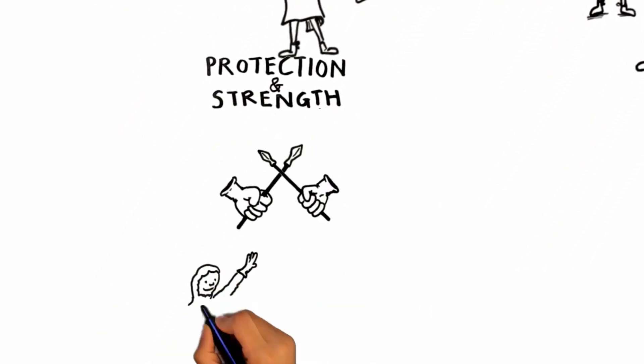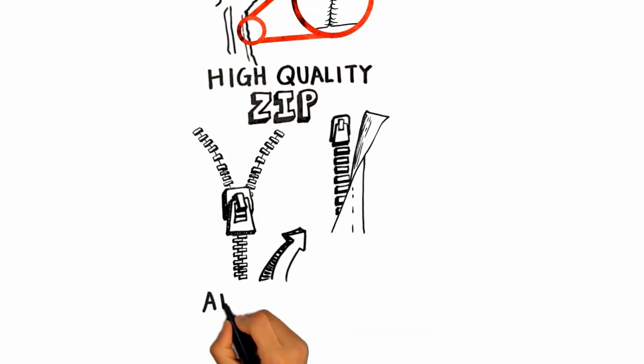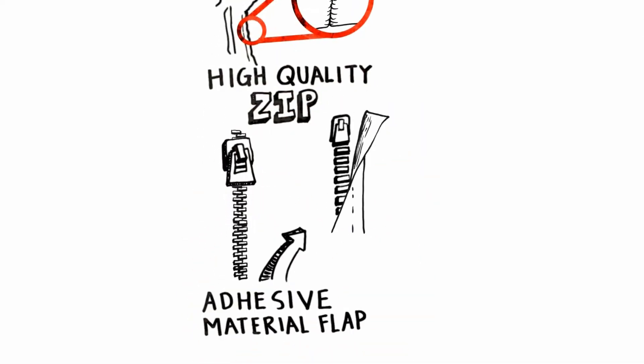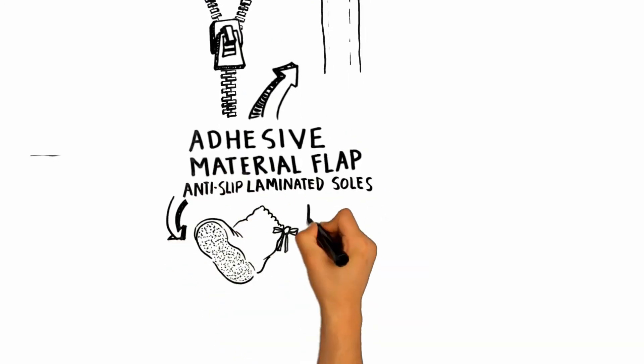For protection and strength, BioClean D garments have bound seams, a high quality zip with an adhesive material flap to protect this vulnerable area, anti-slip laminated soles and reinforced ties.